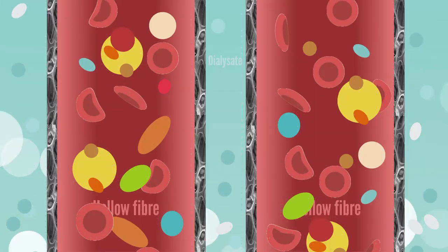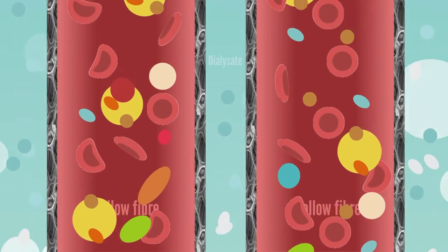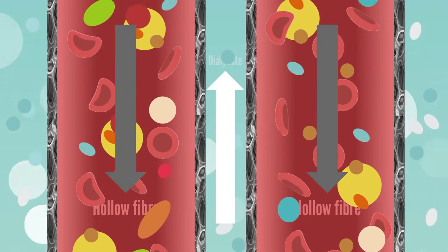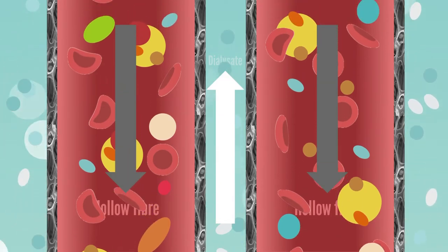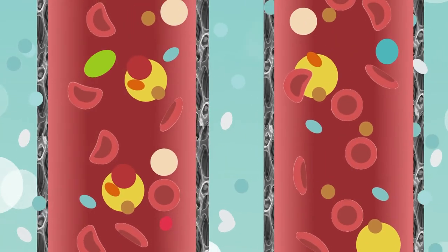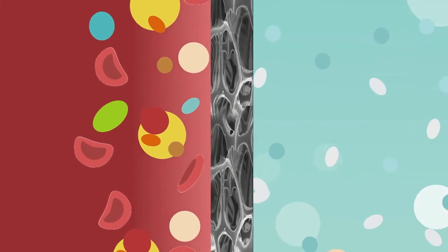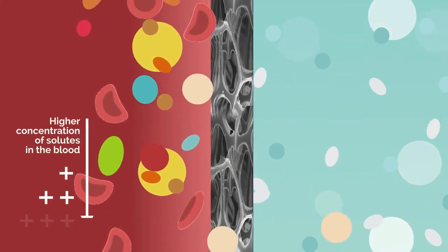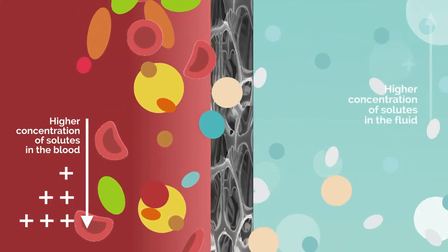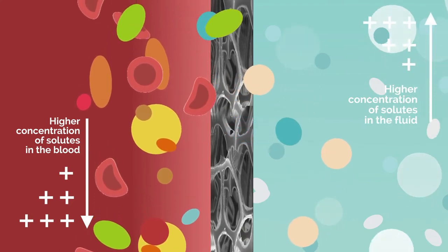In hemodialysis, the membrane allows the patient's blood and dialysate to run side by side in a counterflow direction, separated by the membrane. By the principle of diffusion, uremic toxins of high concentration in the blood move across the semipermeable membrane to the toxin-free dialysate.